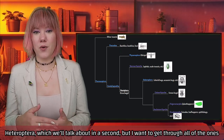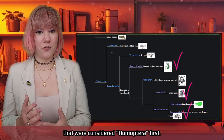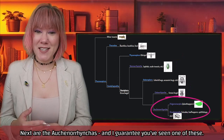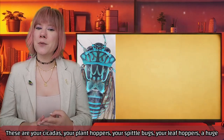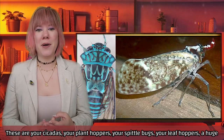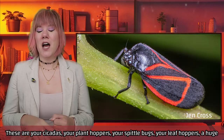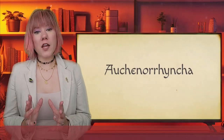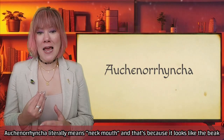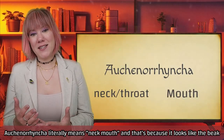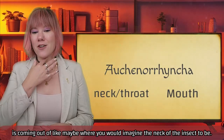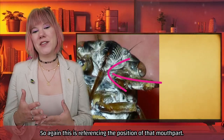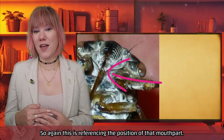Next are the Auchenorrhyncha, and I guarantee you've seen one of these. These are your cicadas, your planthoppers, your spittlebugs, your leafhoppers — a huge, cosmopolitan suborder of insects. Auchenorrhyncha literally means 'neck mouth,' because it looks like the beak is coming out from around where you would imagine the neck of the insect to be. So again, this is referencing the position of that mouthpart.